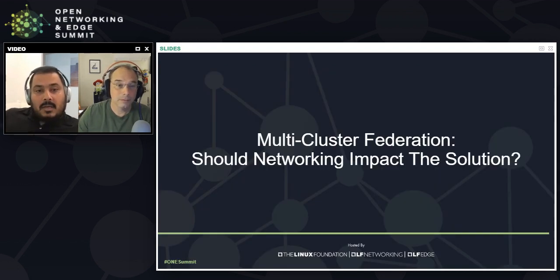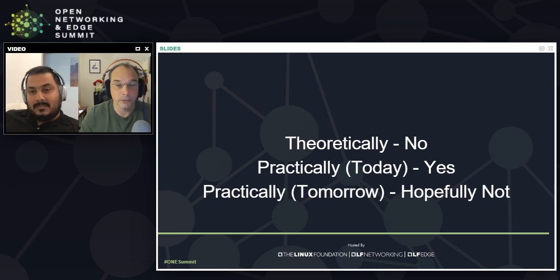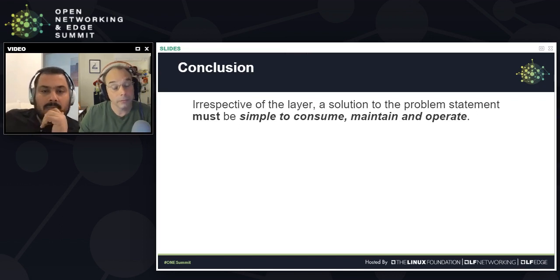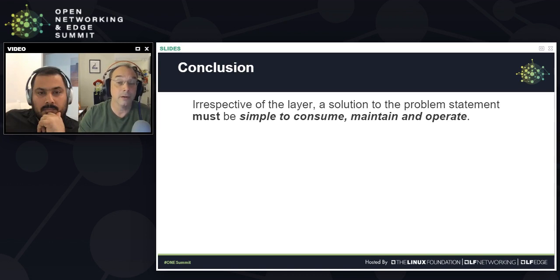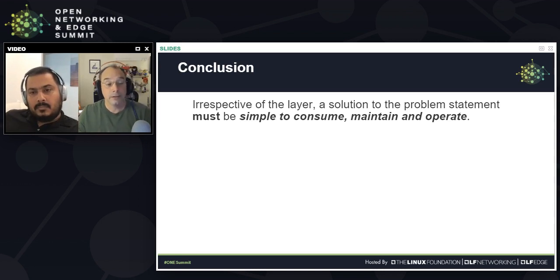That brings us back to our original question: should networking impact the solution? Theoretically, no. But practically, as Anil has shown, the answer is yes — today we have solutions that are a little too glued to the networking layer. Our conclusion is that we need to focus on solutions that, irrespective of the network layer, are simple to operate, consume, maintain, and run. If we follow these guidelines across whichever solution becomes more predominant — including modifying existing ones — we can definitely hit this goal.